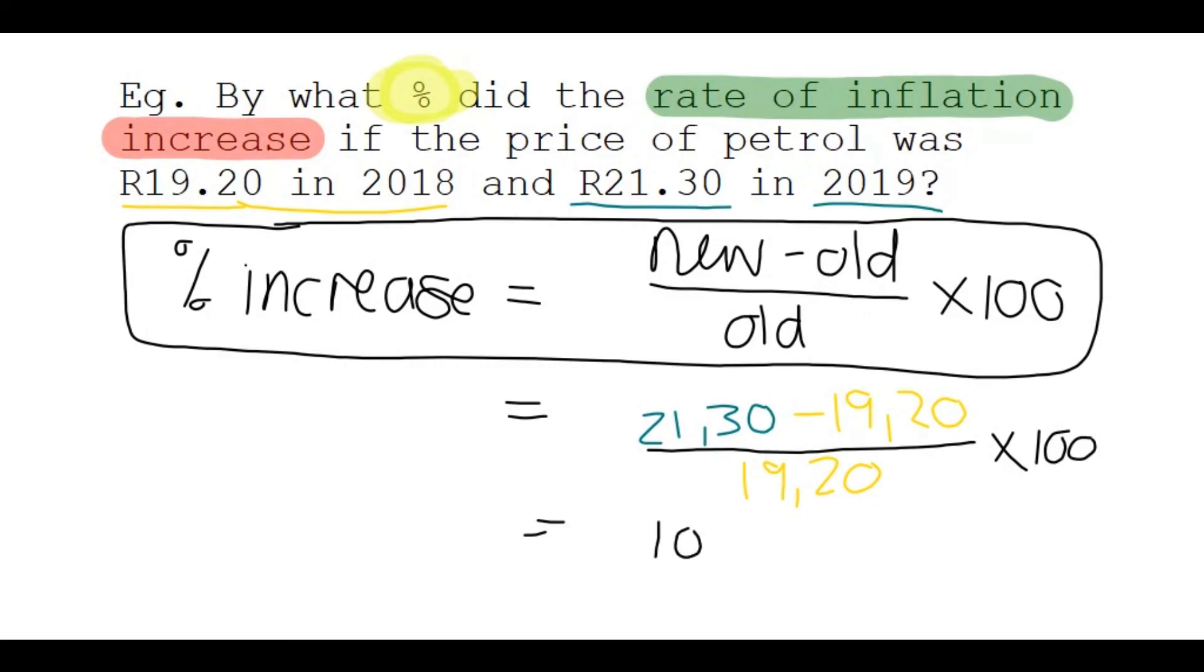Put it all in your calculator. You'll find 10.94% or if you round it off, 11%.